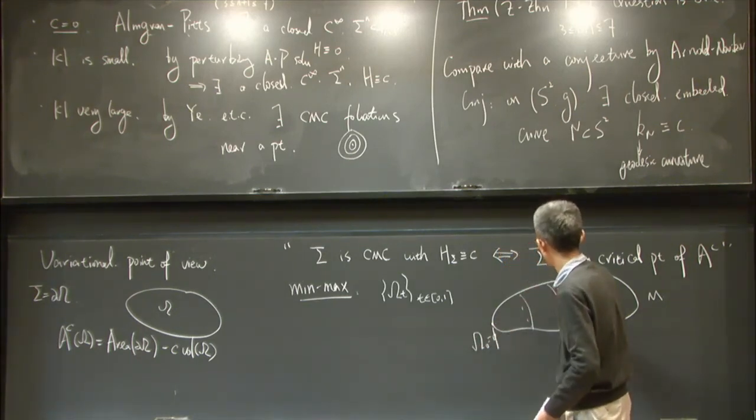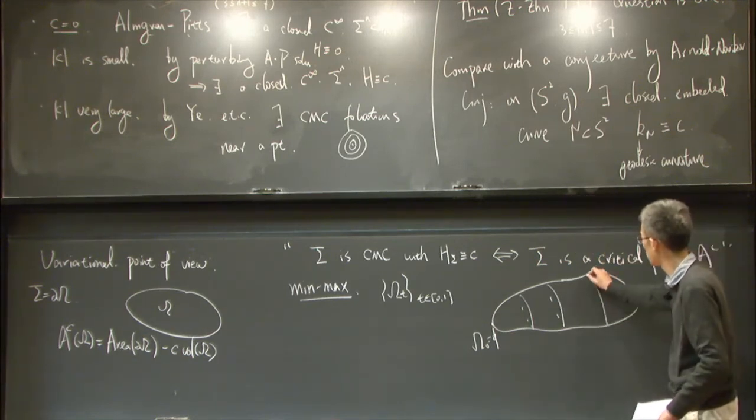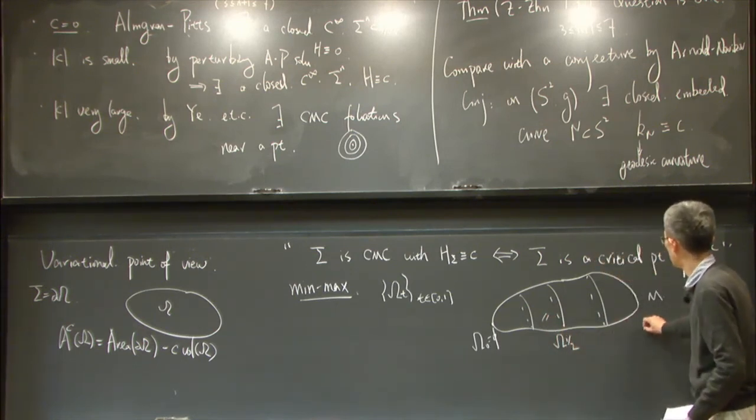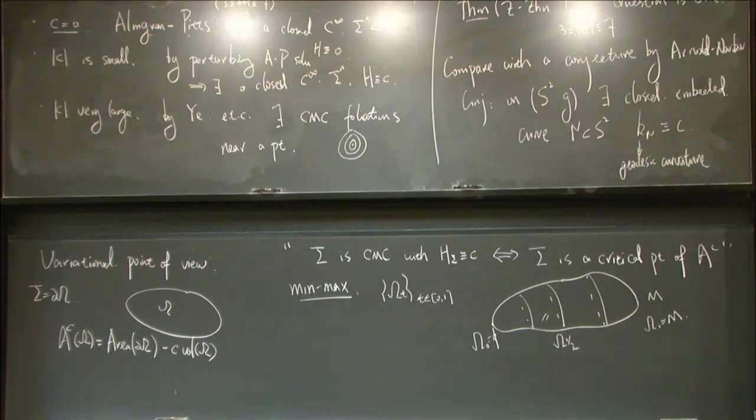Then we try to use this open set to sweep out the whole manifold, say this is my omega one half. So my omega 1 is the whole manifold.